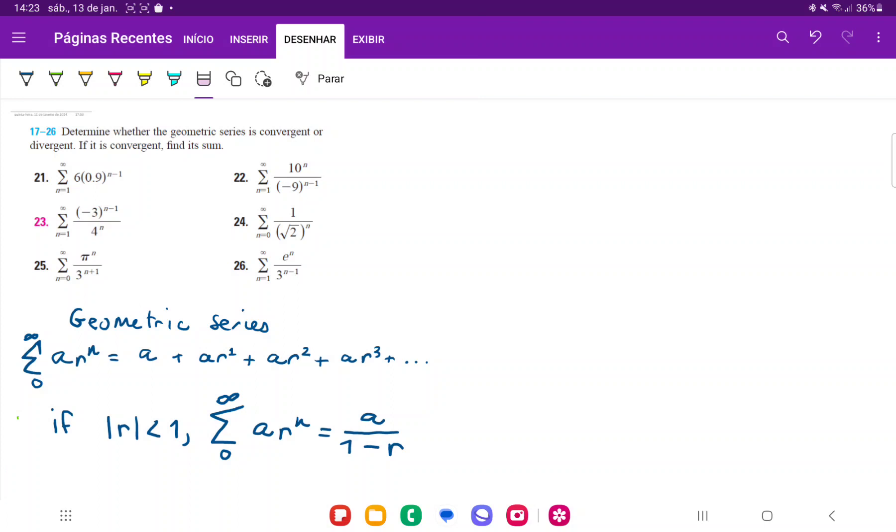Because if we're essentially adding 0, it means that the total sum is not going to change. And that's only possible whenever the absolute value of r is less than 1.